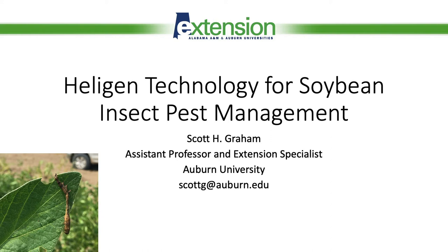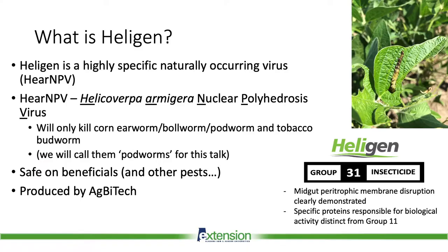Today I'll be talking about the use of Helogen as a new technology for soybean insect pest management. So to start off, what is Helogen? Helogen is a highly specific, naturally occurring virus. It's Helicoverpa armigera MPV — HearMPV is what we call it.